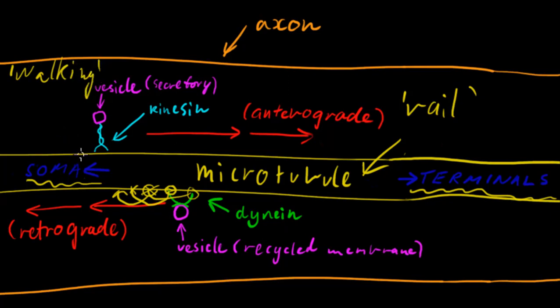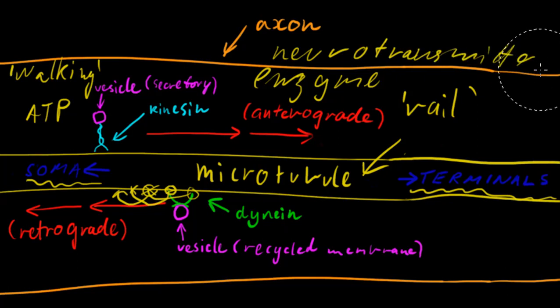And it does this by the hydrolysis of ATP and both of these are moving in this walking fashion and using ATP and most of the time if something's travelling in the anterograde direction the vesicle will contain something like an enzyme or a neurotransmitter or perhaps nutrients.